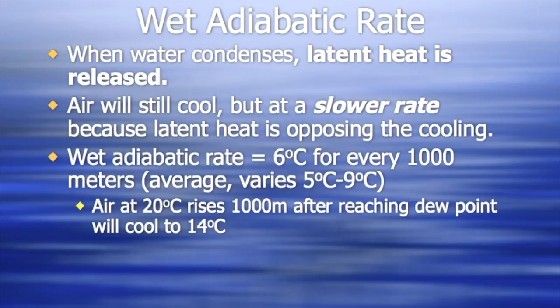And so the wet adiabatic rate is approximately six degrees Celsius for every thousand meters. That's an average. It actually varies from anywhere from five to nine degrees Celsius. We'll usually use five because it's just a friendlier number. And again, you don't have to memorize that.